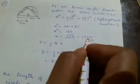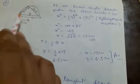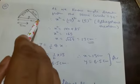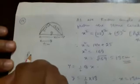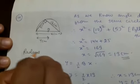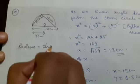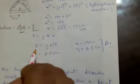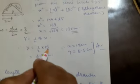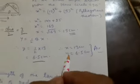Now for y: x is the diameter of the circle and y is the radius. As we know, radius equals diameter divided by 2, so y equals x divided by 2. Therefore y equals 13 divided by 2, which equals 6.5. So x equals 13 centimeters and y equals 6.5 centimeters.